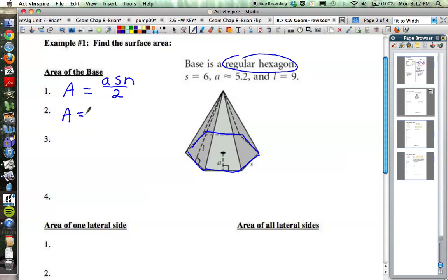We're told that the apothem is 5.2, so 5.2 times the side length, which we're told is 6. And the number of sides, since it's a hexagon, is 6 divided by 2. So punching that in, we get 93.6. So the area is 93.6.